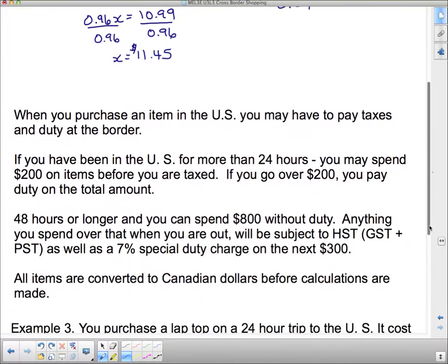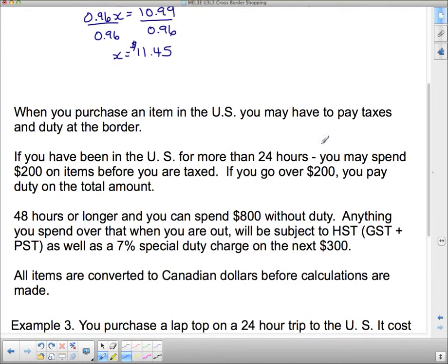when you purchase an item in the US, you may have to pay taxes and duty at the border. So, you may have to pay all those Canadian taxes when you get it back across here. In addition to any American taxes, depending on what state you're in. If you've been to the US for more than 24 hours, you may spend $200 on items before you are taxed. If you go over $200, you pay duty on the total amount.